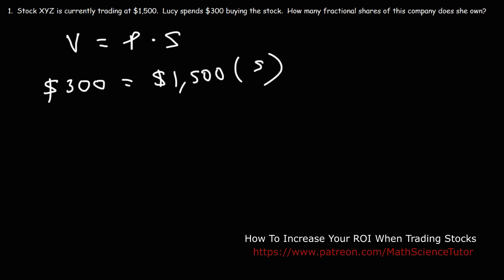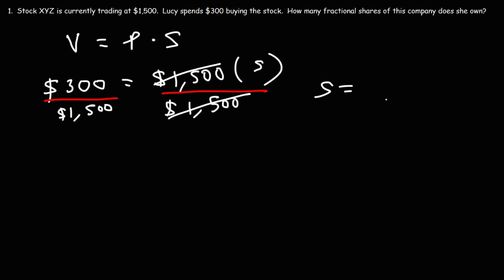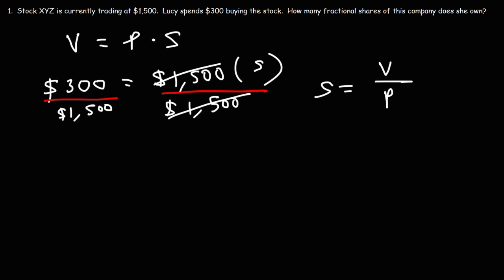What we need to do is solve for S. To do that, we get S by itself by dividing both sides by $1,500. So the fractional shares she owns equals the value of her investment divided by the price of the stock — $300 divided by $1,500. When you divide these two numbers, you get 0.2, or 0.20. That's the number of fractional shares that she owns.